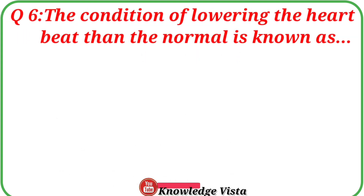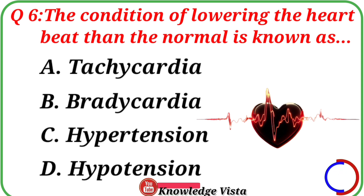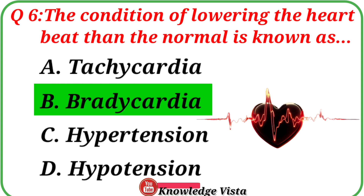Question No. 6. The condition of lowering the heart beat than the normal is known as. Your options are: A. Tachycardia, B. Bradycardia, C. Hypertension, D. Hypotension. Correct answer is option B: Bradycardia.